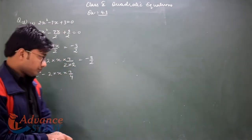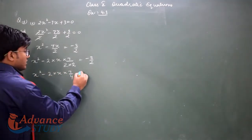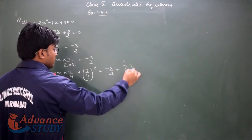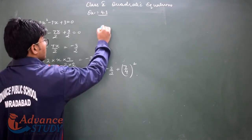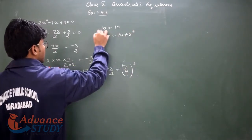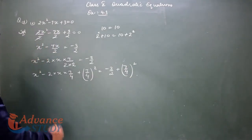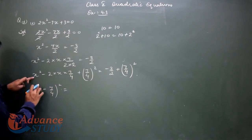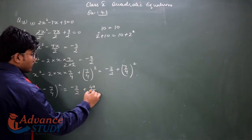b² is identified, and we add it to both sides. So from minus 3 upon 2 we add plus 7 upon 4 — that is b² = (7/4)² = 49/16. Now we take LCM. LCM is 16: 8 times 3 is minus 24, plus 49. So x minus 7 upon 4 whole squared equals 25 upon 16.